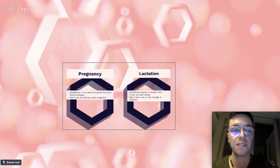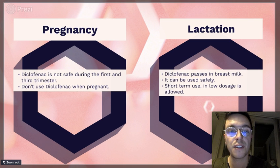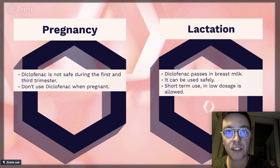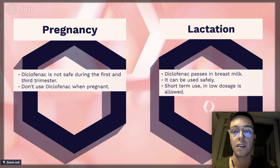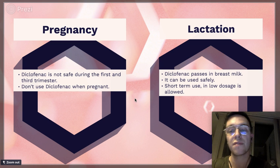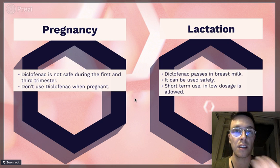Then lastly regarding pregnancy. Diclofenac is not safe to use in pregnancy, neither in the first nor in the third trimester and may even lead to miscarriages, so please don't use it. Regarding lactation, Diclofenac passes in the breast milk but can be used safely. However, it's advised to only do so for short term in a low dose.